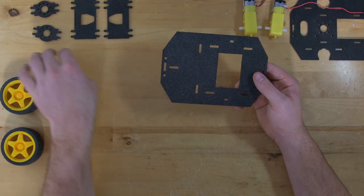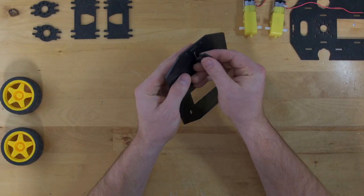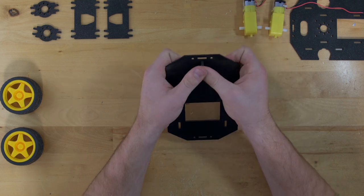For the first step, we'll grab our ABS base plate and attach the plastic caster to the bottom smooth side of the plate. Just snaps right in.